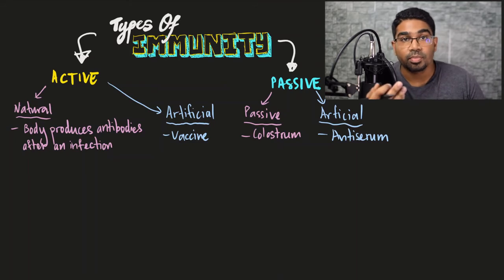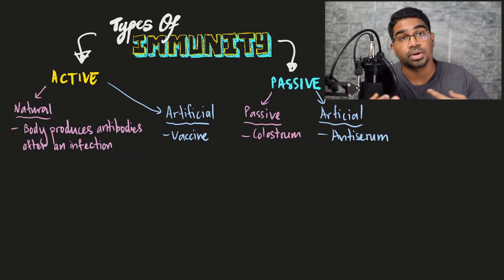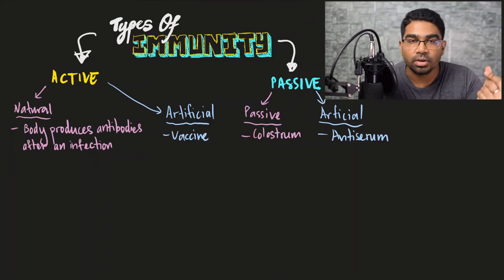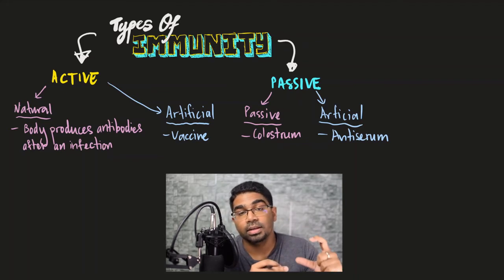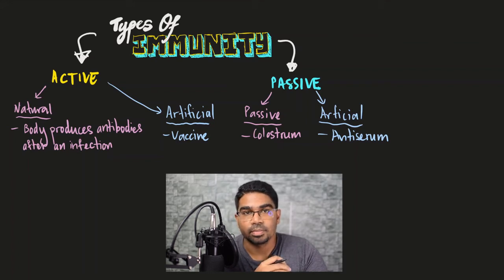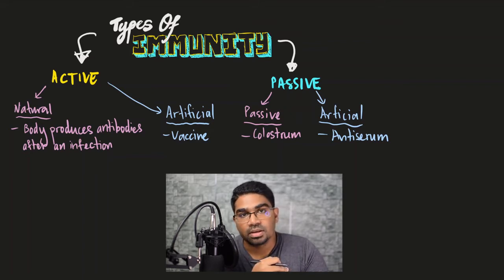An example of artificial passive immunity is antiserum. Antibodies are directly introduced into the body, making it a type of passive immunity since the body does not produce them. To obtain these antibodies, the antigen is injected into horse blood. White blood cells in the horse recognize the antigens and produce antibodies, so the horse blood becomes full of antibodies. The blood is then drawn, and the antibodies are extracted and administered as antiserum.